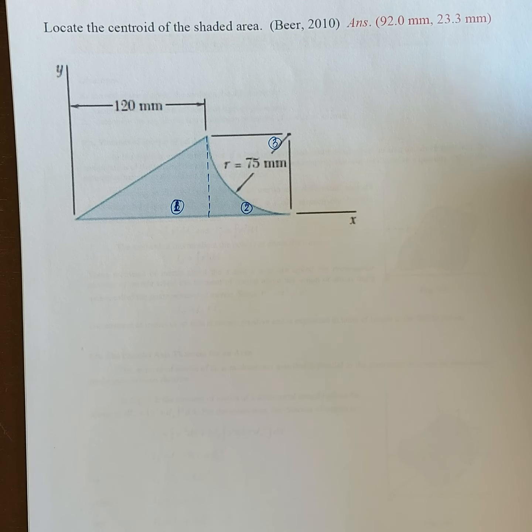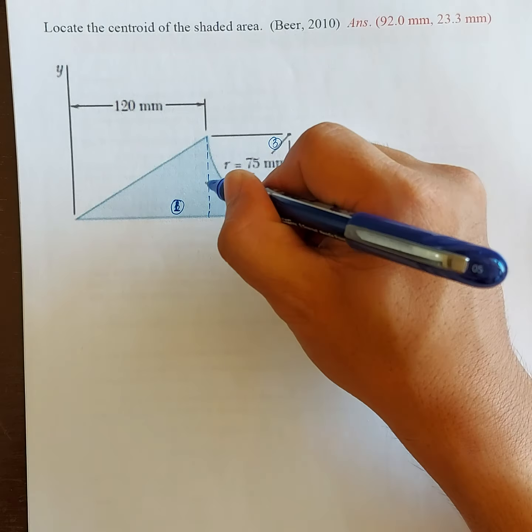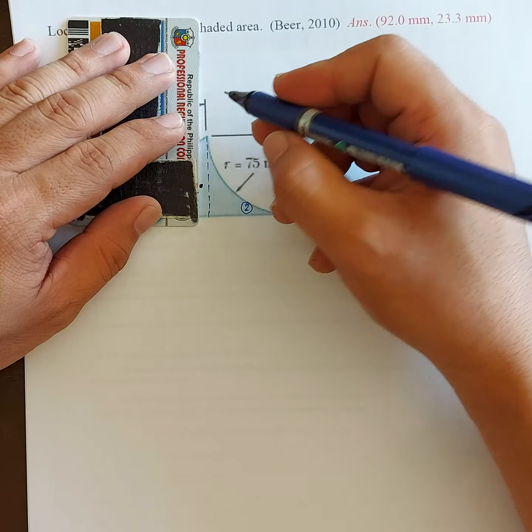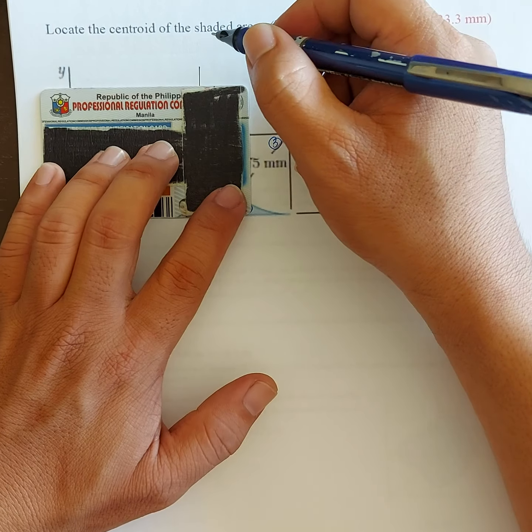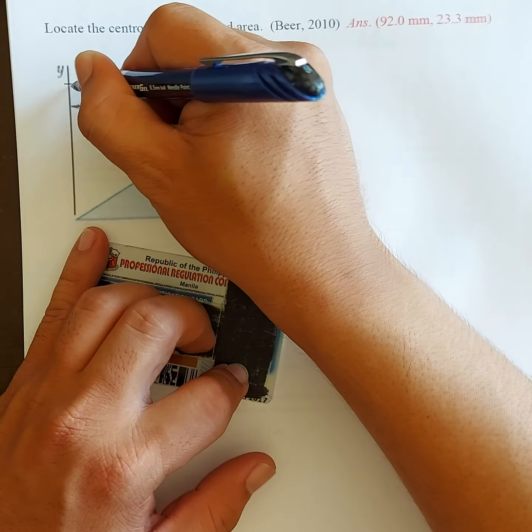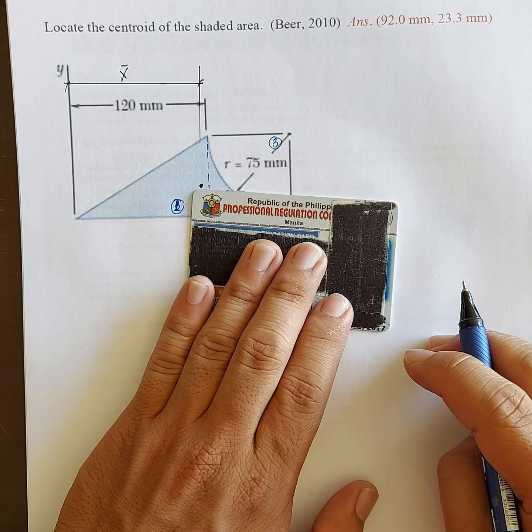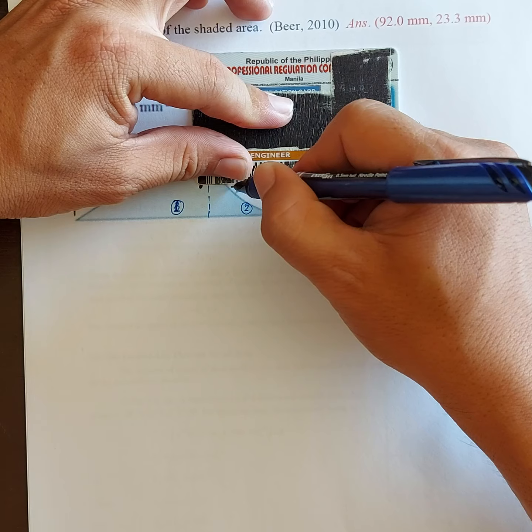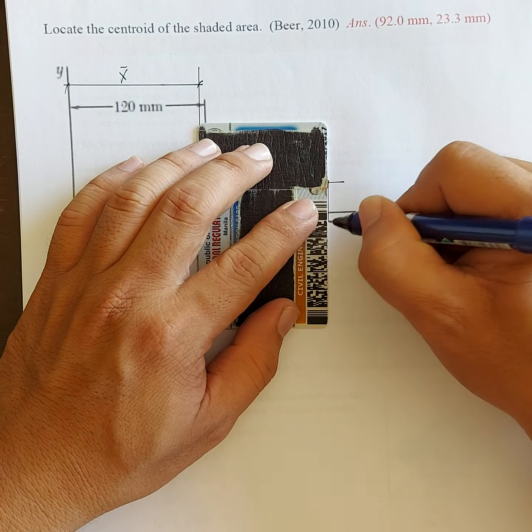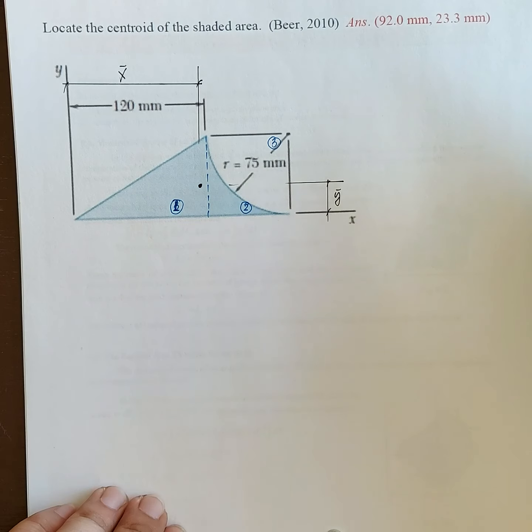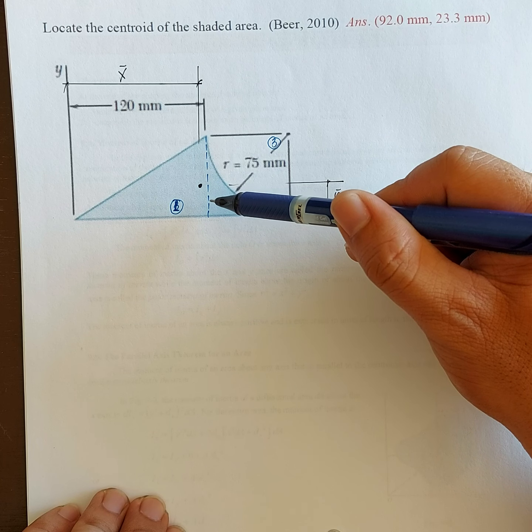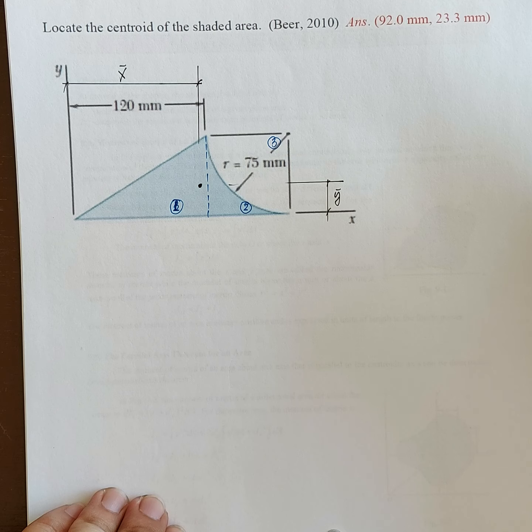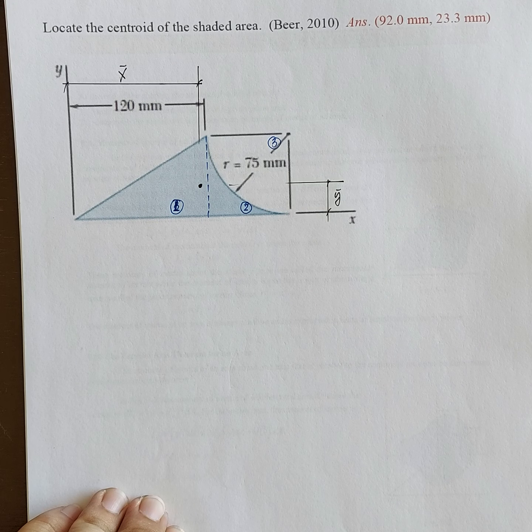So we have three areas of concern here. So the centroid is here. So the x-bar is this. Y-bar is this. That's our y-bar. Here it is.